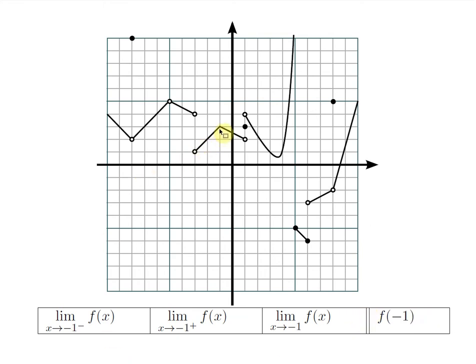The next x-value is negative 1. The limit from the left, traveling along the graph, gives a guess of 3. From the right, you also guess a y-value of 3. The two-sided guess is therefore 3. I encourage you to write the entire notation out every time. The actual y-value: there is a solid point, so f of negative 1 equals 3. Here we see the case where the limit and the function value are actually the same number. When the two-sided limit equals the actual y-value, this situation is so special it's called continuity — we'll discuss this very soon in class.